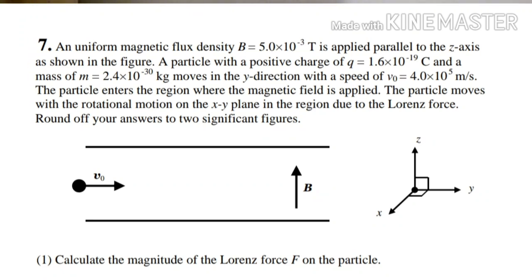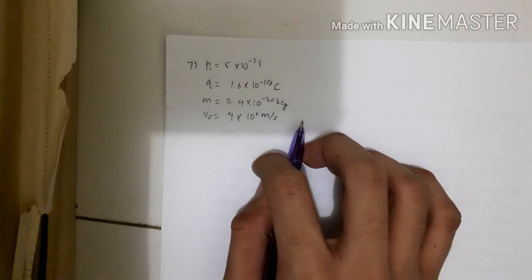For Cousin Physics part 7: there is a uniform magnetic field with a magnetic flux density B of 5×10⁻³ Tesla, applied parallel to the Z axis as shown in the picture. There is a particle with positive charge Q of 1.6×10⁻¹⁹ Coulombs, mass m of 2.4×10⁻³⁰ kilograms, moving in the y direction at speed 4×10⁵ meters per second. The particle enters the magnetic field region and moves with rotational motion on the xy plane due to Lorentz force. Answers should be rounded to two significant figures.